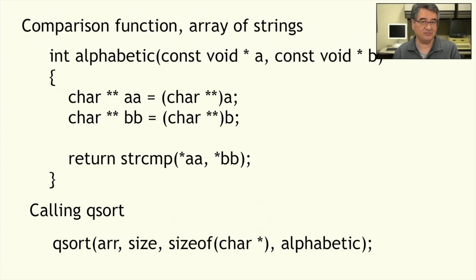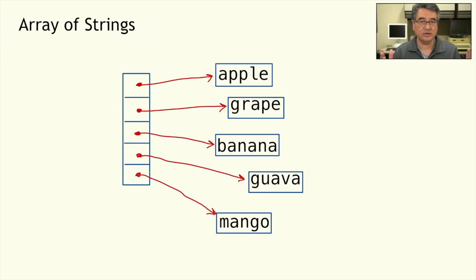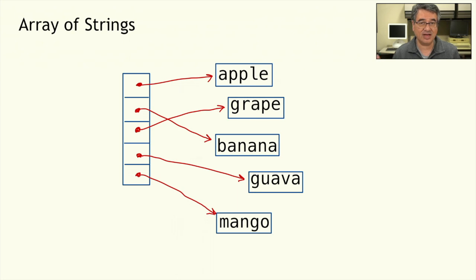When we call qsort, we pass in the name of the array, the number of elements, and the size of each element. Here each element is a character pointer, so we calculate the size of a character pointer. Then we pass in the name of the comparison function. When sorting an array of strings, you don't need to move the individual strings — all you have to do is move the pointers to them. After the sort, the pointers have been rearranged but the strings themselves haven't moved. This makes sorting an array of strings much faster than sorting a two-dimensional array, because we only copy pointers, which are much smaller than whole strings.